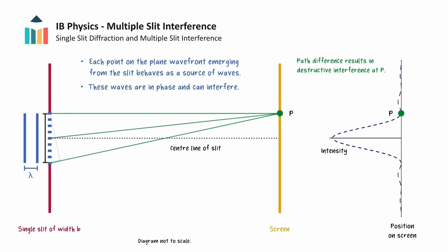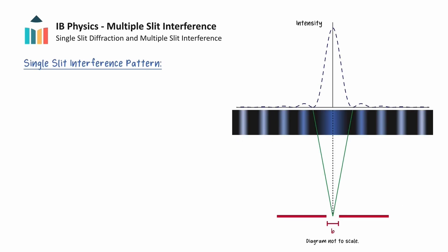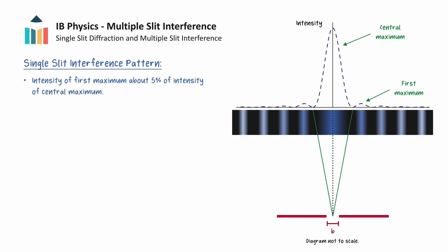It can be shown that when the path length difference from P to each side of the slit is equal to lambda, destructive interference occurs. This leads us to an equation that allows us to determine the angle to the first minimum for a given wavelength and slit width. The equation is theta equals lambda over b, where the small angle approximation has been used. If we take a closer look at the intensity graph and interference pattern from single slit diffraction, notice how the intensity of the first maximum is considerably smaller than the intensity at the central maximum — it is about 5% of the height of the central maximum.